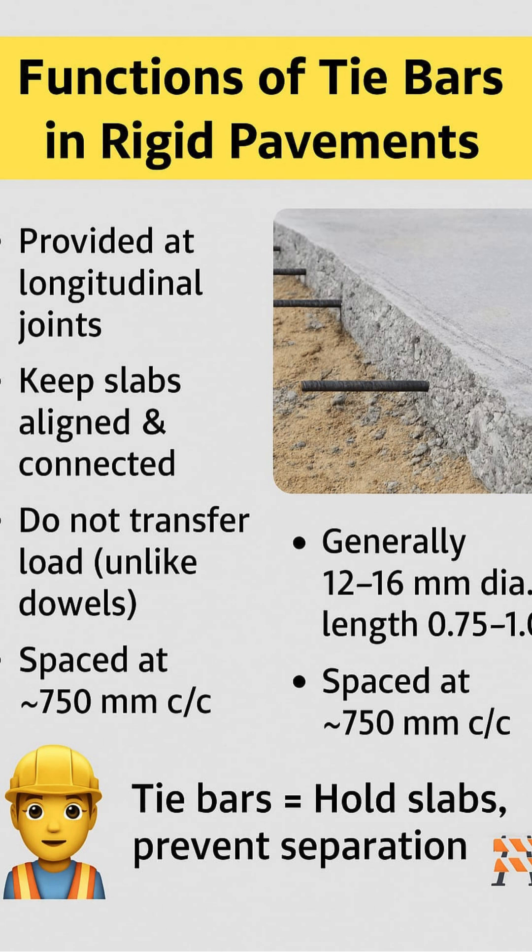Tie bars are generally 12 to 16 mm in diameter, with lengths between 0.75 to 1.0 meter. They are usually spaced at about 750 mm center to center.